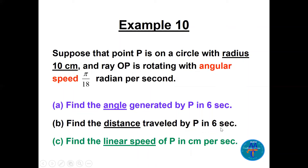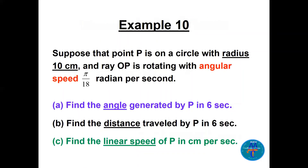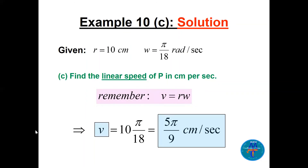Part b: find the distance traveled by P in six seconds. Using s = rθ, with r = 10 cm and θ = π/3 radians, we get s = 10π/3 centimeters. Part c: find the linear speed of P in centimeters per second. Using v = rω, v = 10 × π/18 = 5π/9 centimeters per second.